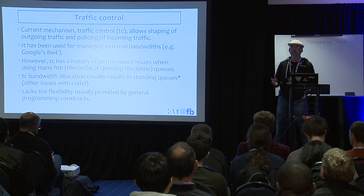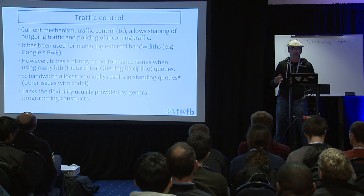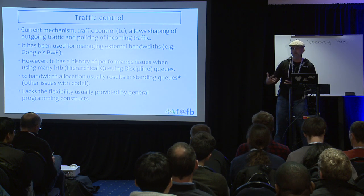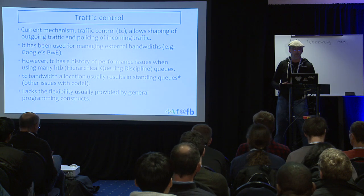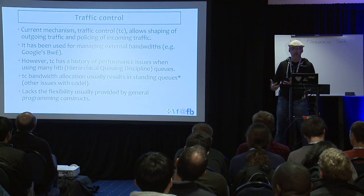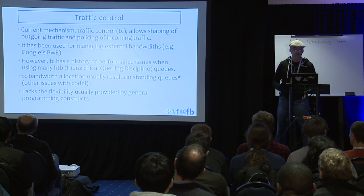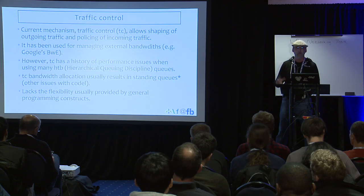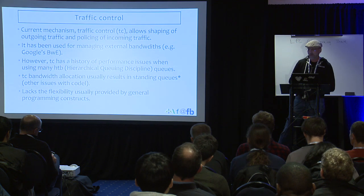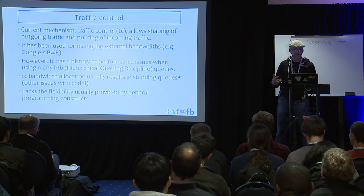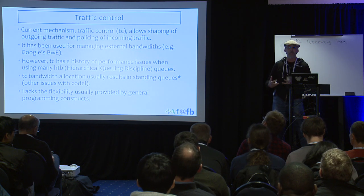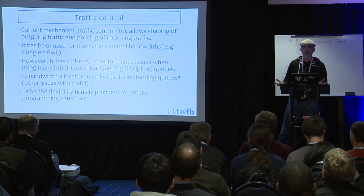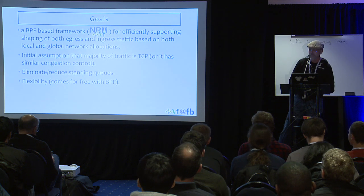But TC has a history of performance issues, like when we're using HTB. There's also an issue when trying to enforce a bandwidth to shape outgoing traffic where we can end up with standing queues. And even though we can use CoDel to try to decrease the size of the queues, there are also some issues with CoDel. More importantly, it lacks the flexibility provided by a more general mechanism like BPF — and it doesn't have a cute logo like BPF.